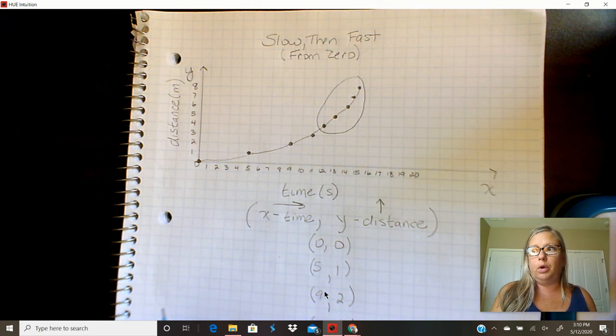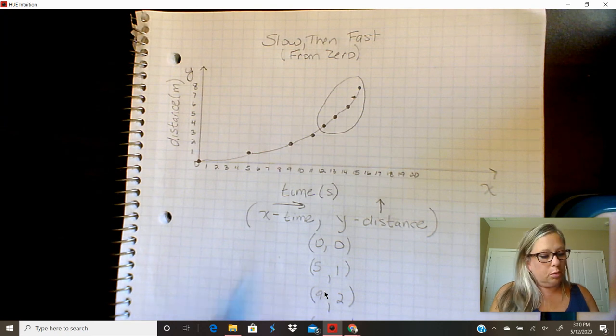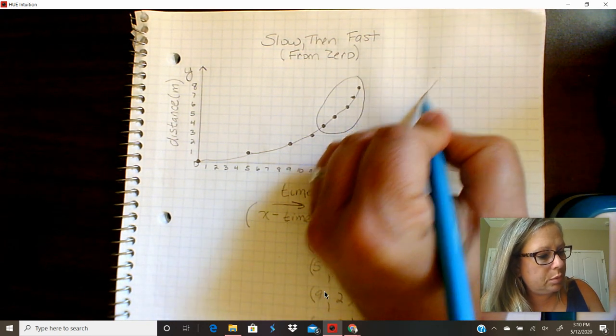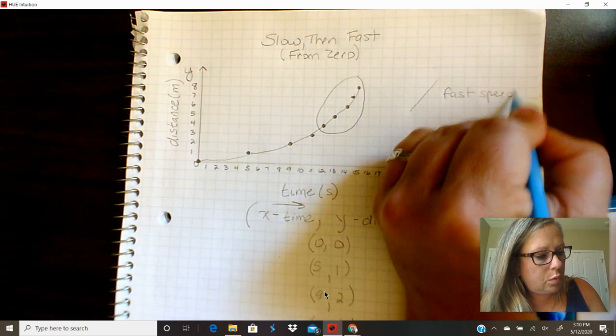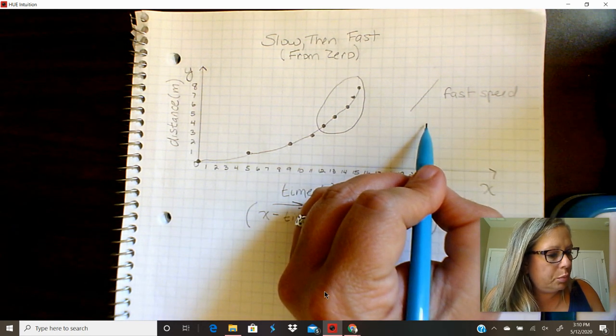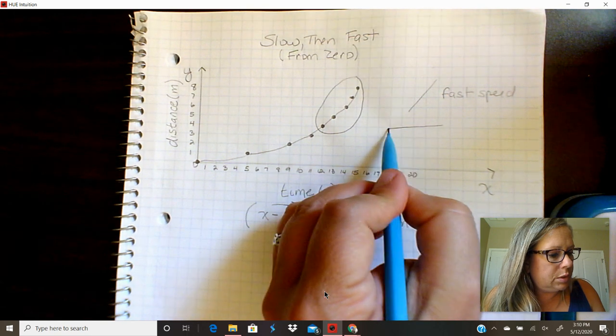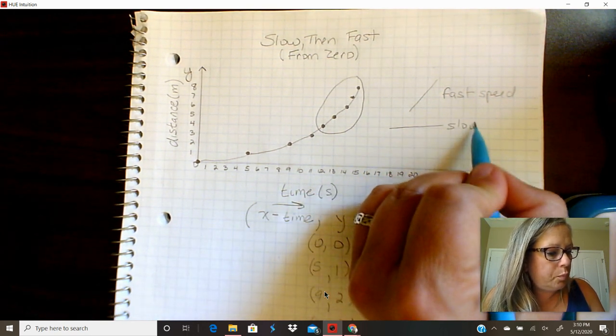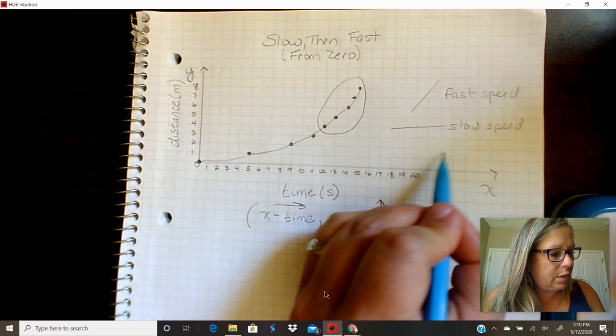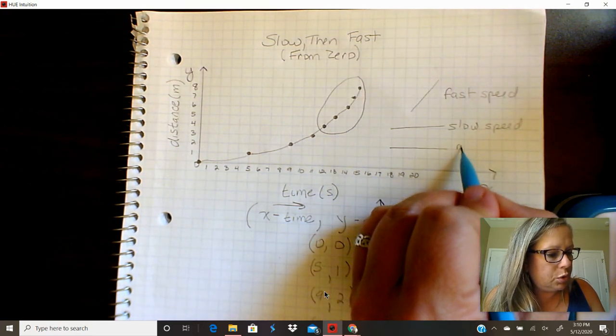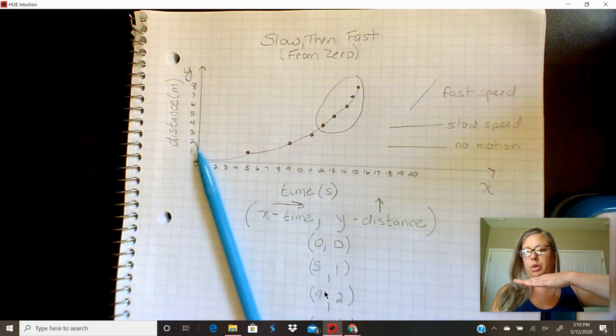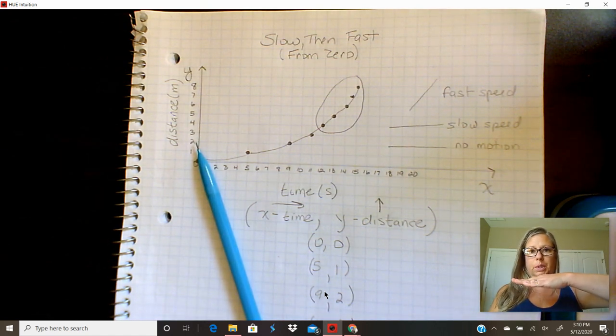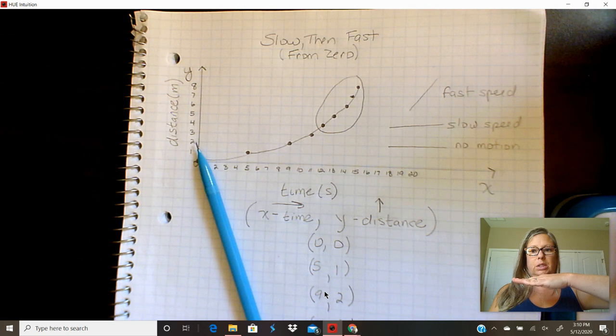Now last week and even I think yesterday in your videos we were talking about how if you are going fast then you have a steep slope, right? So a steep slope is a fast speed and a slope that is not so fast is slower, it's a slow speed. And we know that because if you have a straight horizontal then there's no motion at all.